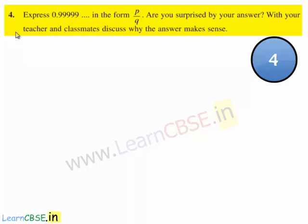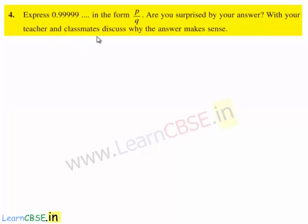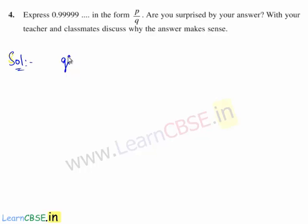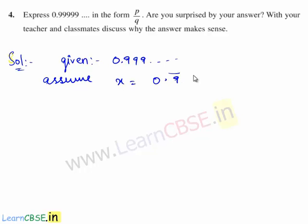Now let us move on to the fourth question. The fourth question is: express 0.999 and so on in the form of p by q. Are you surprised by your answer? Discuss with your teacher and classmates why the answer makes sense. So let us assume x is equal to 0.9 bar. Consider this as equation 1.